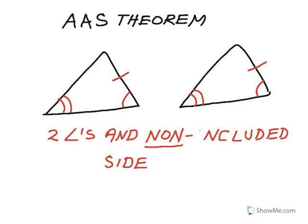The first theorem we're going to look at is the Angle-Angle-Side theorem. We're used to looking at the Angle-Side-Angle theorem where the side is the included side, but now we're going to have a case where the side doesn't have to be included between the two angles. If we have two angles and any side in one triangle congruent to two angles and any side in another triangle, then the two triangles are congruent.